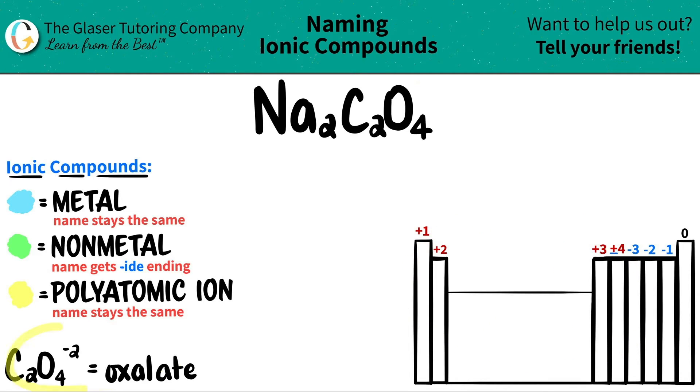So I wrote down the polyatomic ion that we're going to see here. C2O4, whenever you see this in a compound, it's always called oxalate. And C2O4 always has a negative two charge. So the ion, the charge, and the name should all be memorized. Okay, and oxalate is right here. Here's the C2O4.